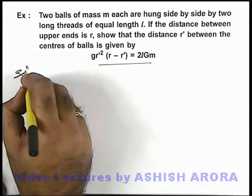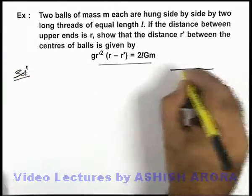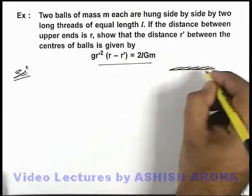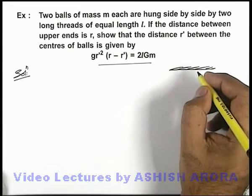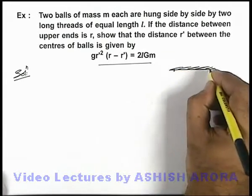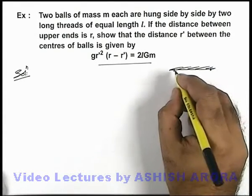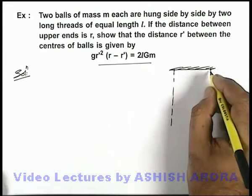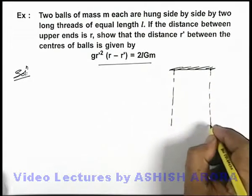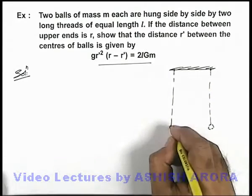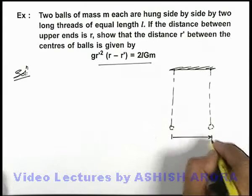In this situation, if we draw the physical case we can see, we are also given that two balls are hung side by side by two long threads. These are two long threads from which the two balls are hung which are at a separation r.